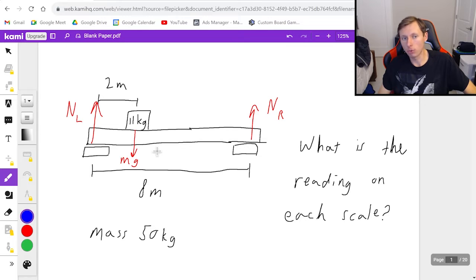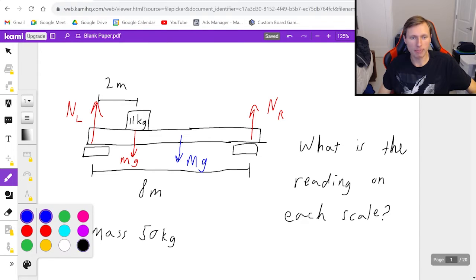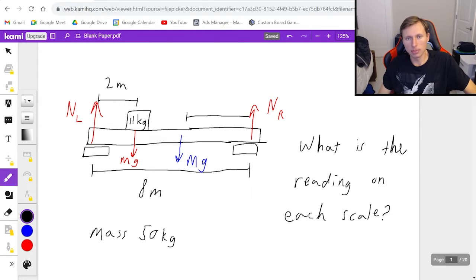Often my students don't know where that force should go. Should the beam force be here, in the middle, or on the right side? The correct answer is it needs to go in the middle because that's where the average of all the weight is going. So I'm going to write mg for the 50 kilograms in the very center, which by the way is 4 meters from each end point.